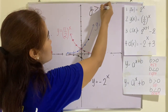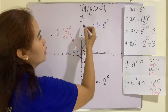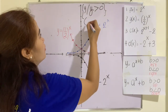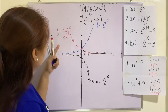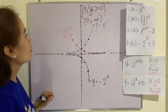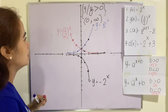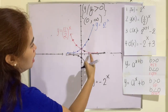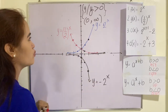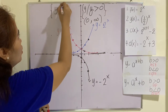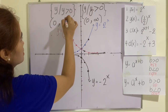Therefore, y is greater than zero. So in set notation, this is how you write it. In interval notation, this is from zero to positive infinity. In the decreasing function, where your base is less than one but greater than zero, it never touches the x-axis. It is a horizontal asymptote. And the range is also greater than zero, so this one is from zero up to positive infinity.